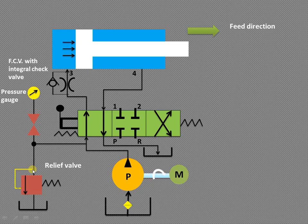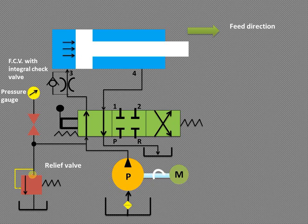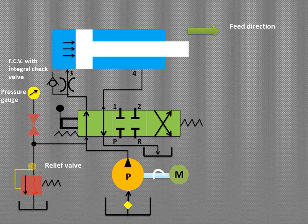If the pressure is excessive compared to the design pressure, the relief valve — which is normally in a closed position as shown — will open. When the pressure exceeds the design value, the arrow shown will shift position, and the liquid flowing from the pump will bypass and go directly back to the receiver, so no further operation will be performed.